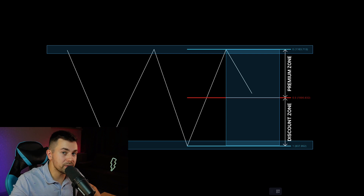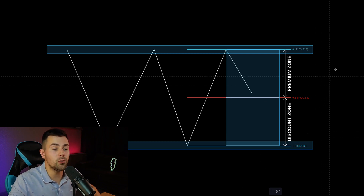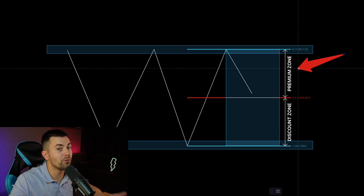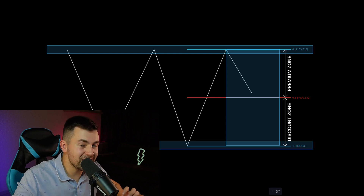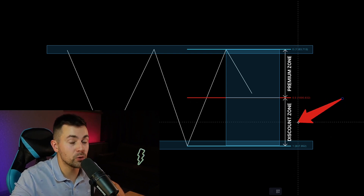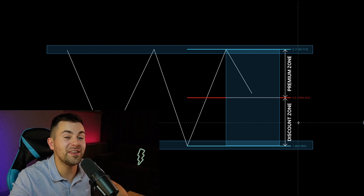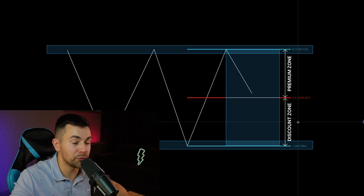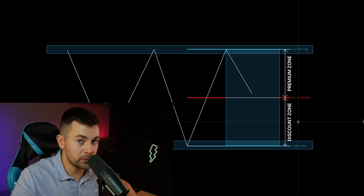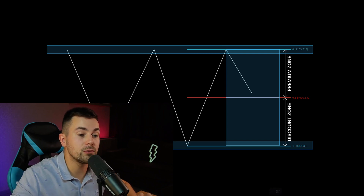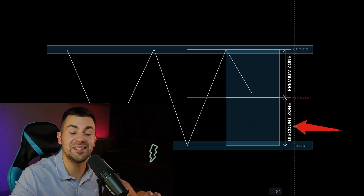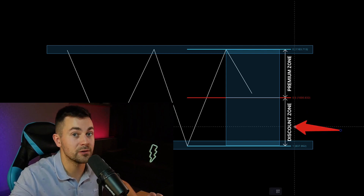The premium zone is a price range on a chart where the price of an asset is overvalued, while the discount zone shows you the price range where the price of an asset is undervalued. So if you're looking for a long-term investment, you should look for buying an asset from the discount zone.